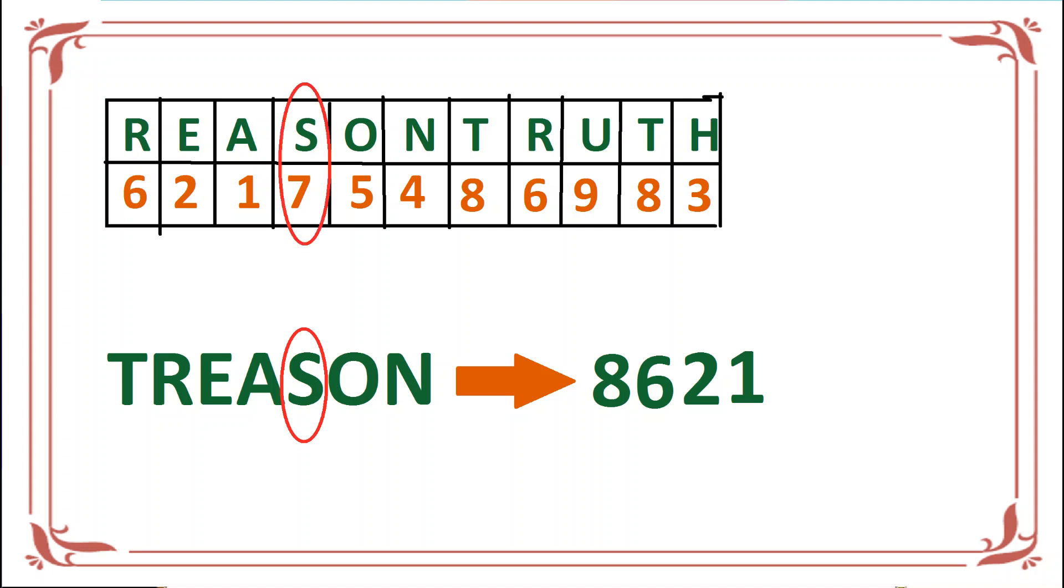So in this way we have coded TREASON with numerical values, which is 8621754. Which option is correct? B is correct.